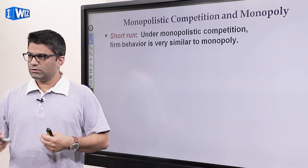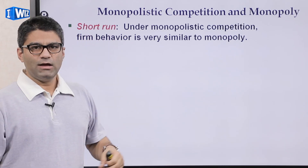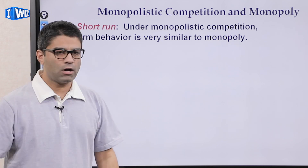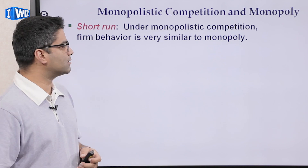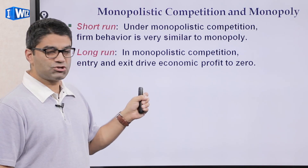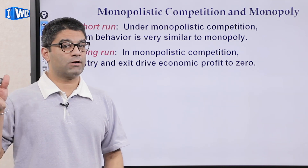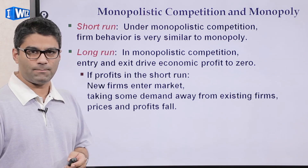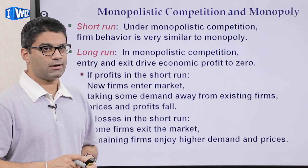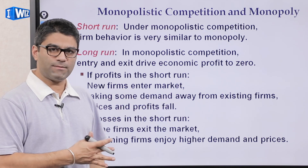In the short run, a monopolistically competitive firm acts identically to a monopoly. In the long run is where you'll see the difference: since there is free entry and exit, other firms can enter and take part of the market share, driving profits down to zero — similar to perfect competition. For example, if firms in a monopolistically competitive market are earning a positive profit in the short run, other firms will enter and produce similar goods, taking some demand away from that producer until zero profits are met.